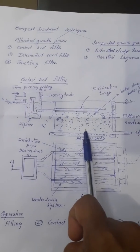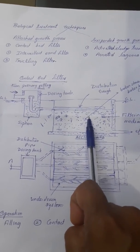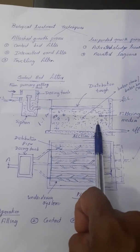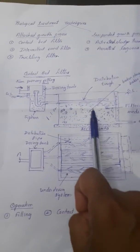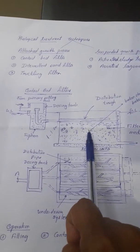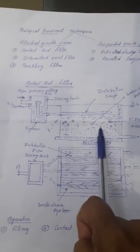The advantages of this contact bed filter: contact beds can work under even small head and can be operated without exposing the sewage effluent. Compared to trickling filters, there is no nuisance of filter flies, and the problem of water is also less.